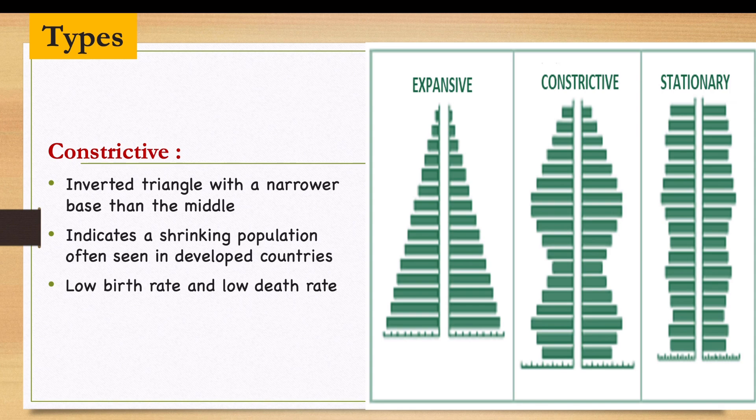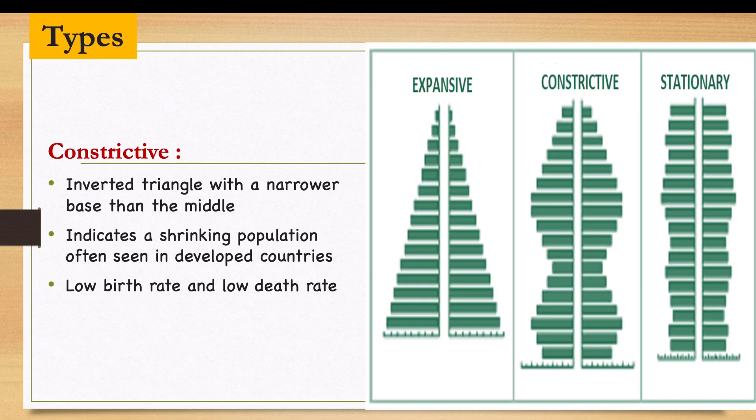The death rate in constrictive pyramid countries is also very low because of improved health facilities and high life expectancy — a lot of people don't die as early as under the expansive type. This tells you that there is more aging, or an older population.